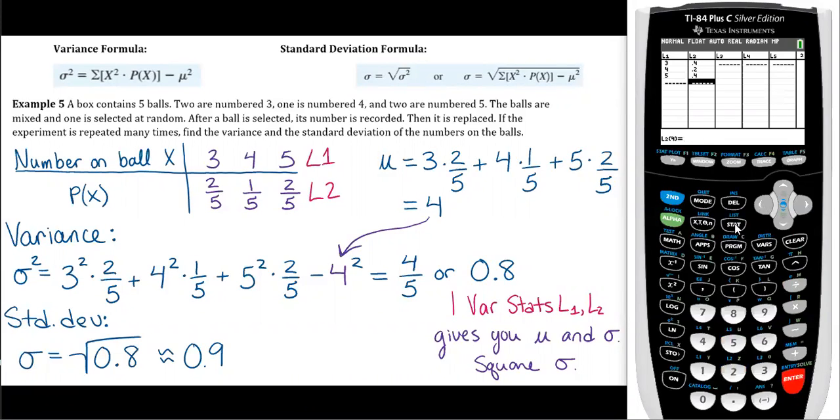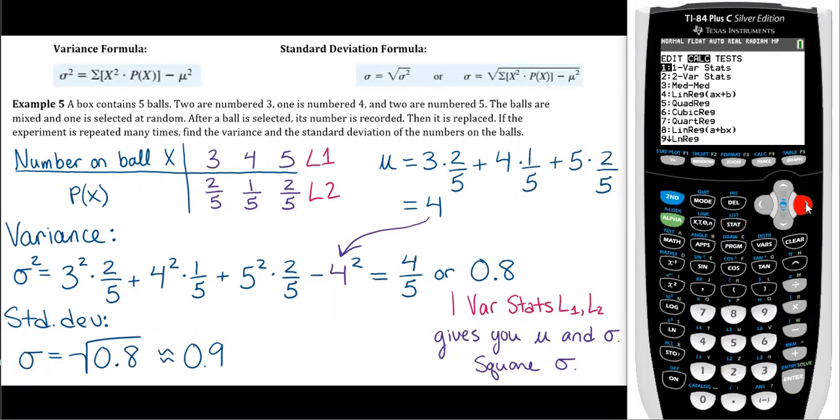Okay, so then what you do is you go to stat, go over to calc, one var stats, and then L1 is your main list. And then your frequency list should be L2. So if that's blank, go ahead and type second two there. And that's going to type in L2.